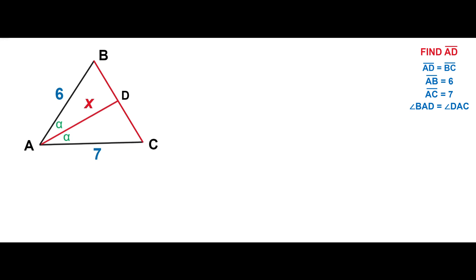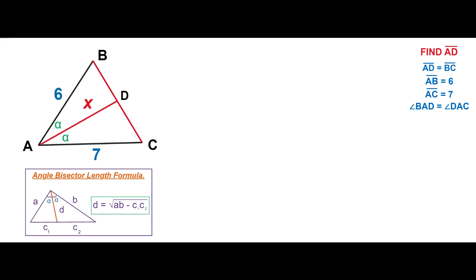For this task we're going to use both angle bisector length formula and the angle bisector property. Here is the angle bisector length formula. The angle bisector length formula establishes a relationship between the product of the two adjacent sides and the product of the divided segments of the opposite side.